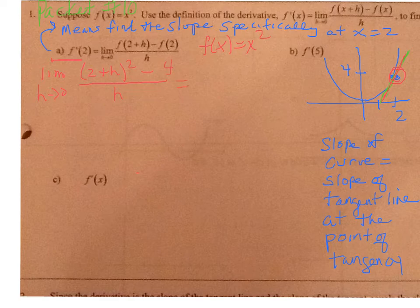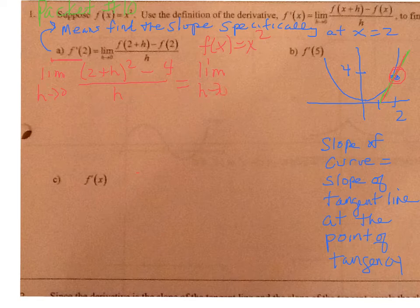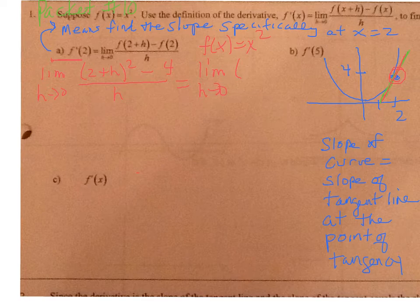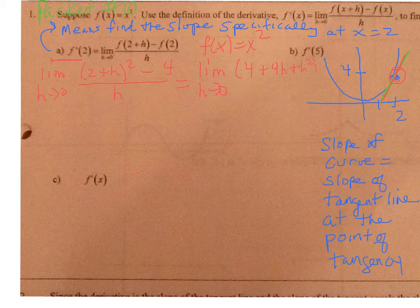We need to do some algebra. So, the limit as h goes to 0, notice I wrote limit again. If I multiply out the 2 plus h squared, that is 4 plus 4h plus h squared. And then I still have to subtract off the 4 originally, all divided by h.